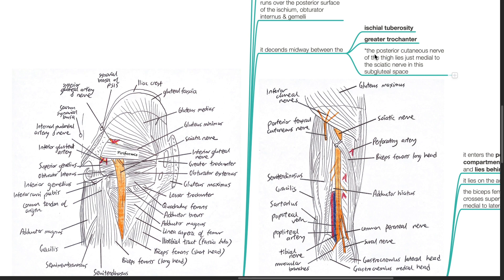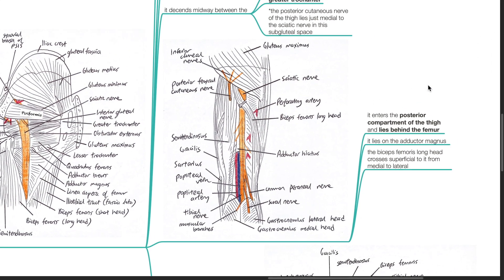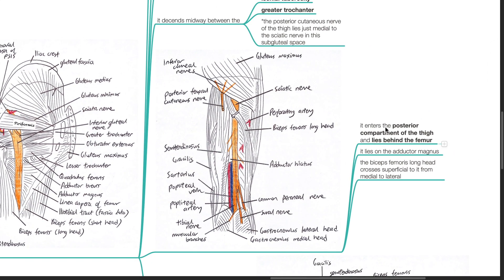The posterior cutaneous nerve of the thigh lies just medial to the sciatic nerve in this subgluteal space. It then enters the posterior compartment of the thigh and lies behind the femur. It lies on the adductor magnus. The biceps femoris long head crosses superficial to it from medial to lateral.